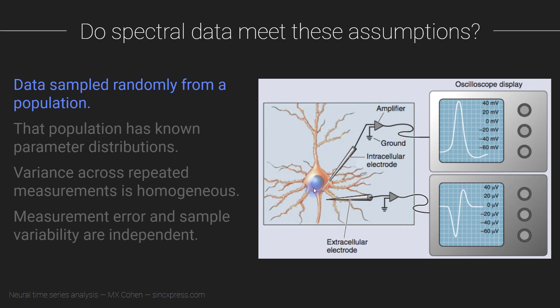We can also think about sampling neurons in the brain. For electrophysiology, the answer is largely no — we are not sampling randomly from neurons. Many neurons in the brain are small and have a relatively low firing rate, making them difficult to identify electrophysiologically. So we sample neurons in a biased way, according to neurons that exhibit certain functional or morphological characteristics. Again, that's not a problem per se, but we need to be careful about generalizing findings.